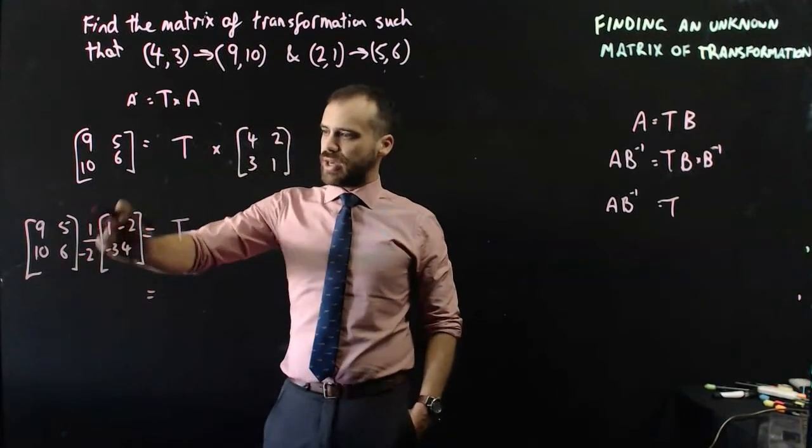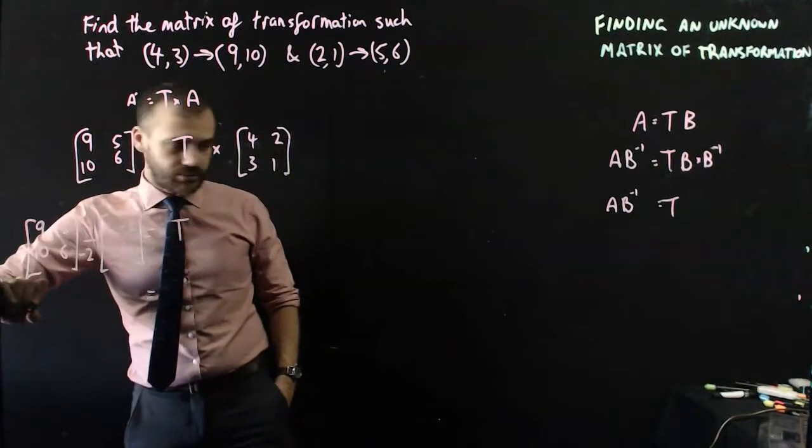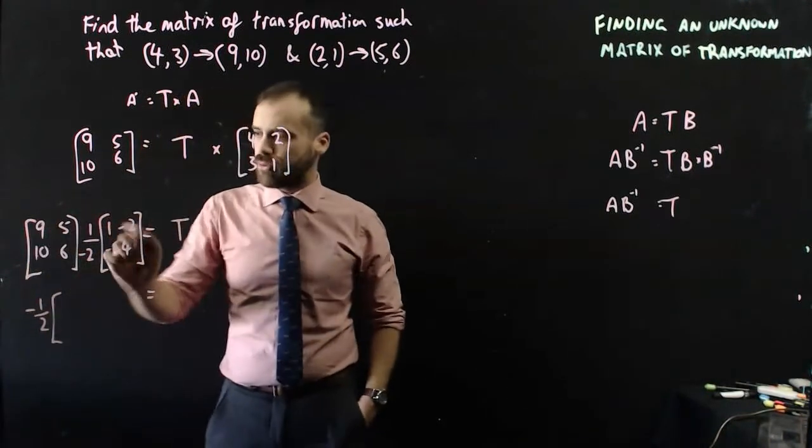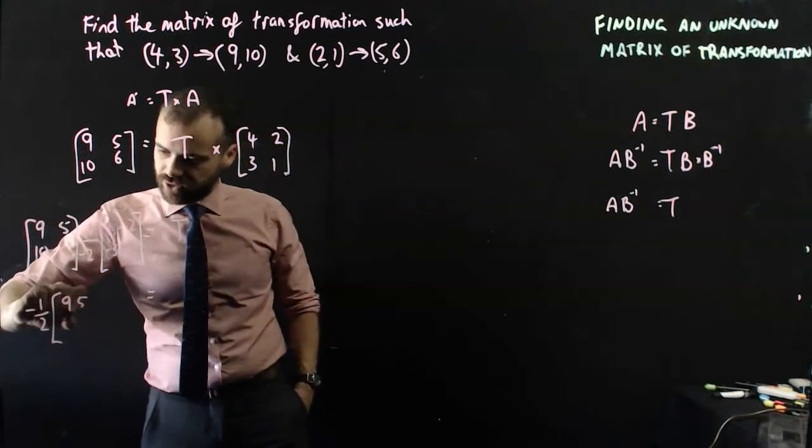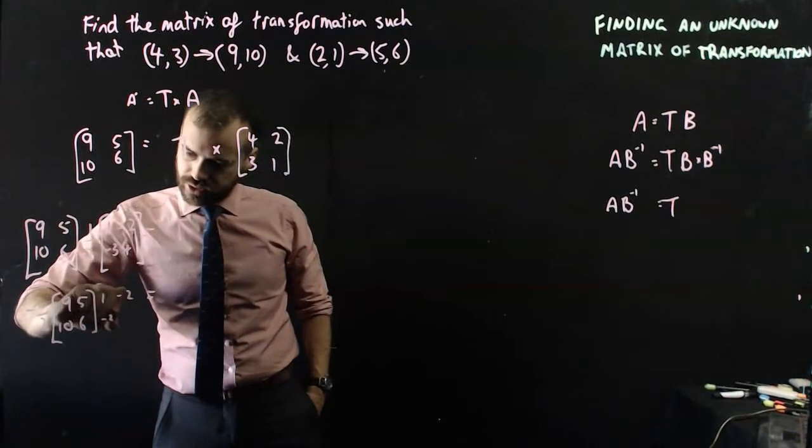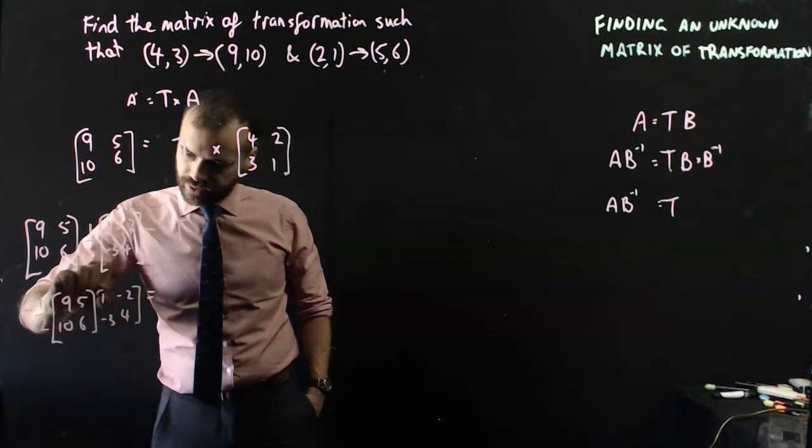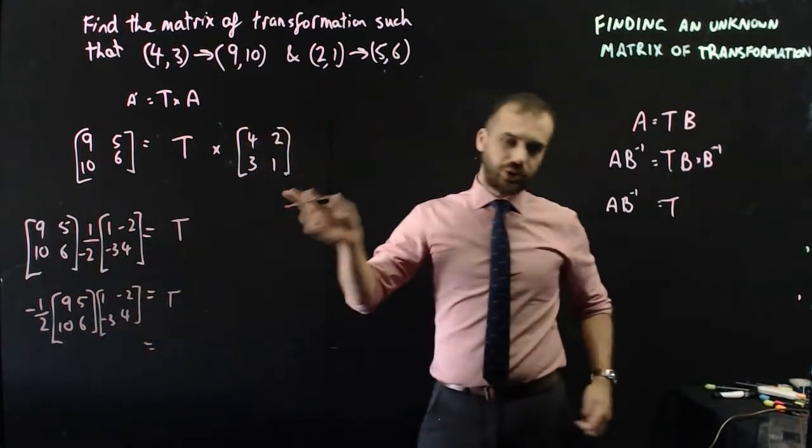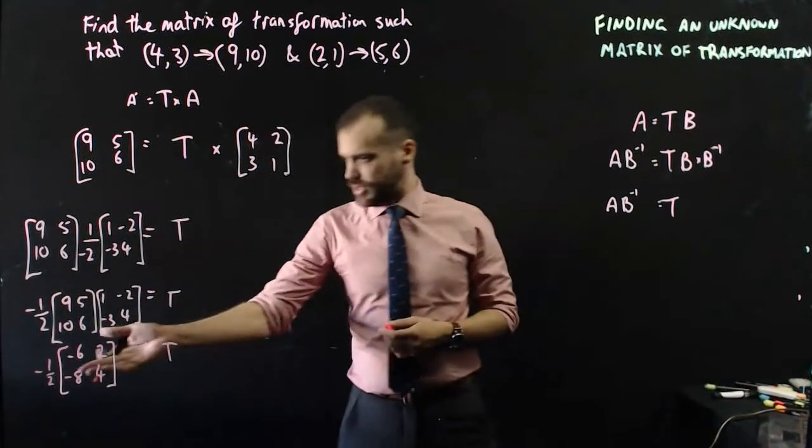I'll just move that negative half out the front. And then, I'm just performing matrix multiplication on [9, 5; 10, 6] and [1, -2; -3, 4]. That matrix multiplication should give me an answer of this.